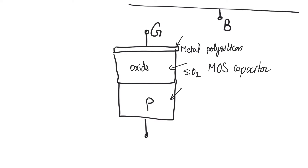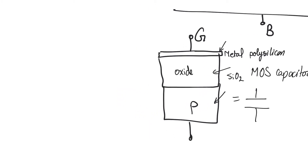If you look at this structure, it is actually a capacitor, because we have a conductive plate on the top, a conductive plate on the bottom, and an insulator in between. However, this differs from a metal-insulator-metal capacitor in one significant way: the bottom plate is not a metal. Semiconductors, unlike metals, have the capacity to form depletion regions, and this is going to have a significant effect on the way this capacitor behaves.